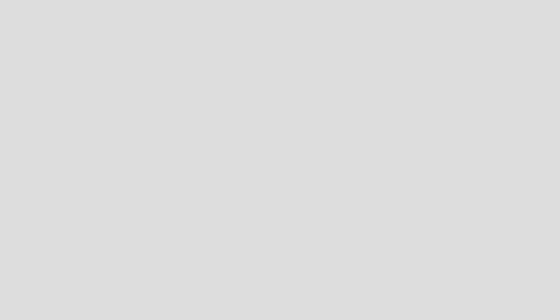As I said before, the term phaser is a contraction of phase vector. This is what a vector looks like. It's an arrow that is used to represent some real-world quantity, like a force. The length of the arrow represents the magnitude of that force, and its direction represents the direction in which the force is applied.